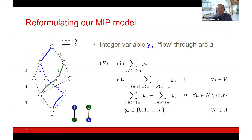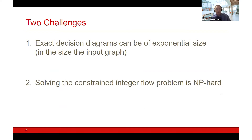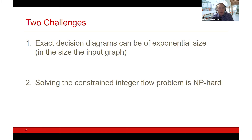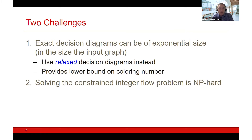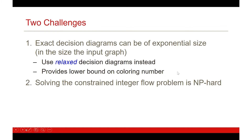The idea is to use the exact decision diagram to formulate the problem more compactly rather than populating a column generation model iteratively. There are challenges: exact decision diagrams may still be exponentially large, and we need to solve an MIP. To the first point, we can use relaxed decision diagrams instead — finding increasingly refined diagrams that give stronger and stronger lower bounds on the coloring number.